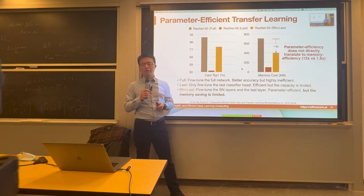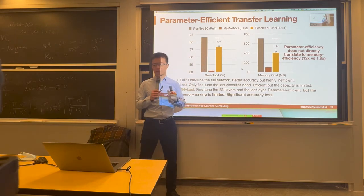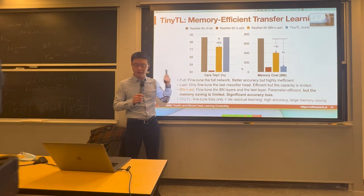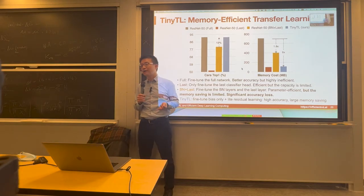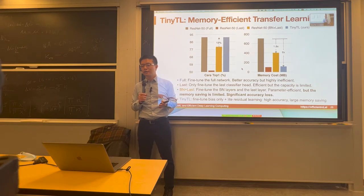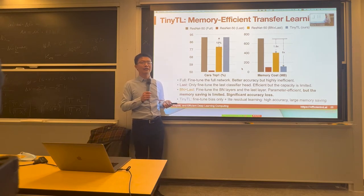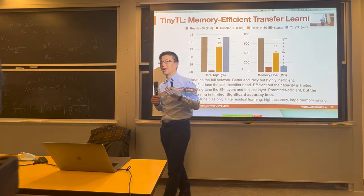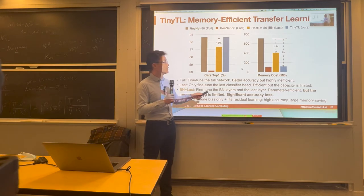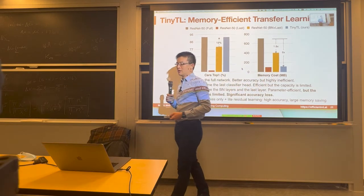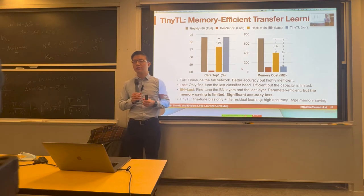So how can we do better? Research called Tiny TL — Tiny Transfer Learning — proposes another approach: fine-tune the bias only. In the equation W times A plus B, we only fine-tune the bias, which doesn't require saving any input activation during backpropagation. And we use light residual learning to compensate for the loss of capacity, which can recover accuracy and bring significant reduction in total training memory. Let's see in more detail how that works.